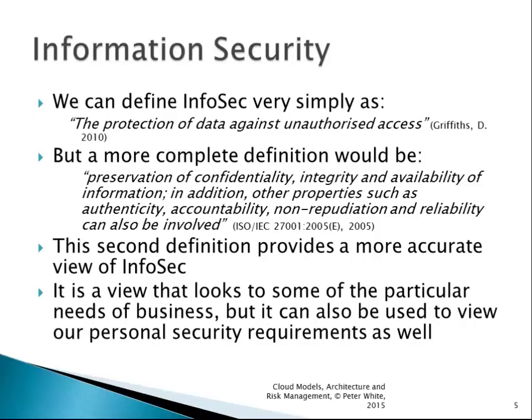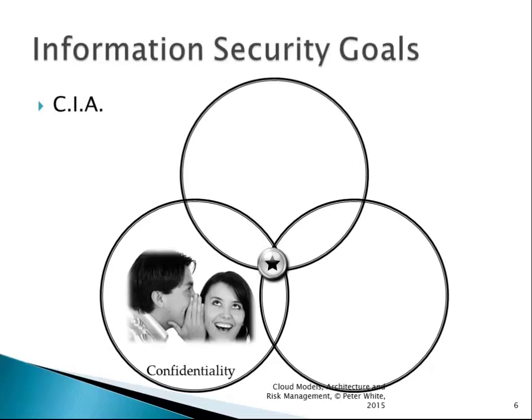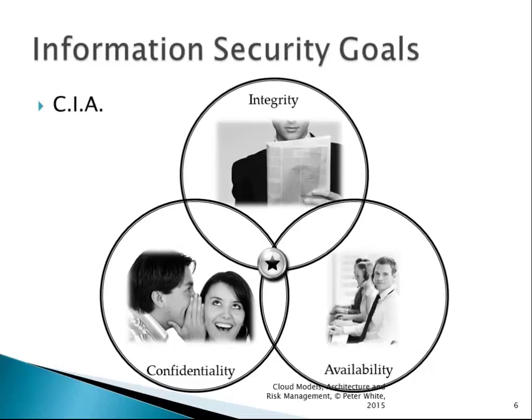This is a much more accurate view — it looks at the particular needs of business, although we can adapt it for personal security requirements. It is really looking at the requirements of the enterprise. We look at this as a series of goals and refer to this as the CIA triad: confidentiality, integrity of data, and availability. We want to keep our data confidential, ensure its integrity is maintained, and that it's available when we need it.